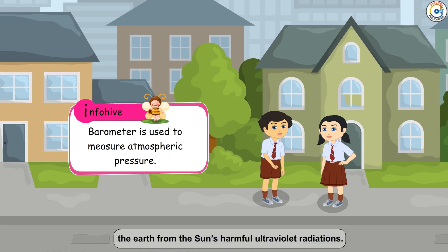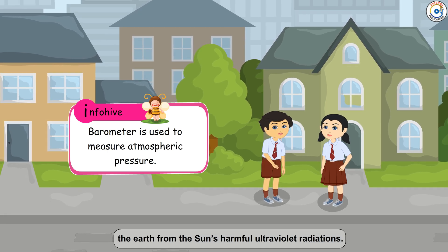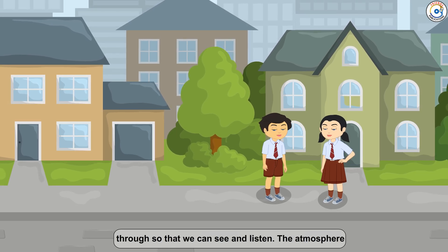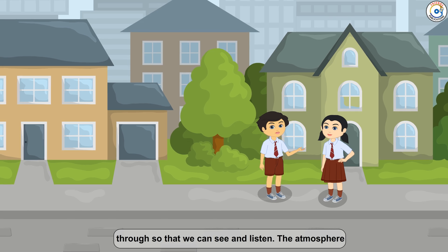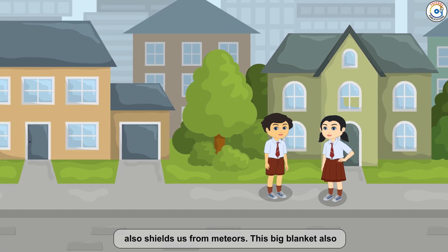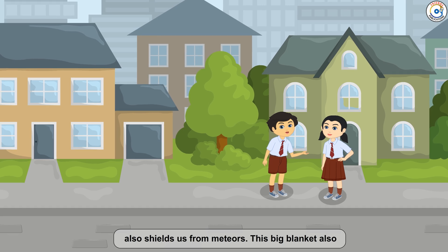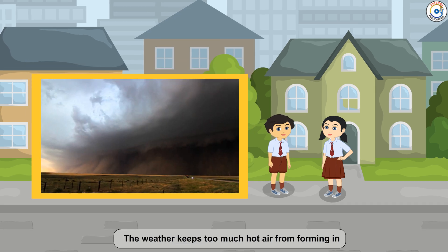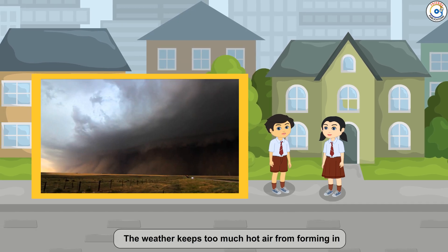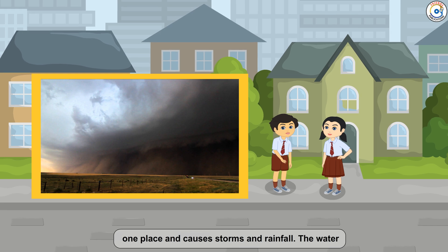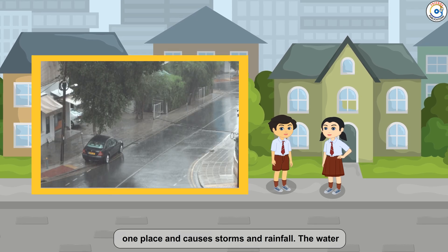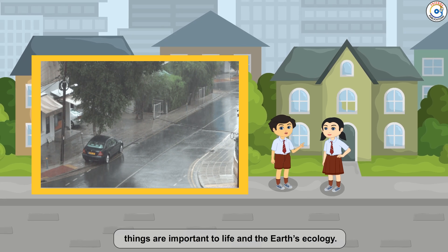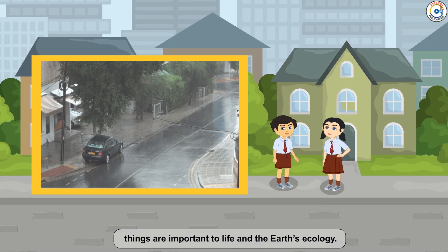InfoHive: A barometer is used to measure atmospheric pressure. The atmosphere also allows light and sound to pass through, so that we can see and listen. The atmosphere shields us from meteors. This big blanket also helps to form our weather patterns and climate. The weather keeps too much hot air from forming in one place and causes storms and rainfall. Water vapor gives rise to the water cycle. All of these things are important to life and the Earth's ecology.